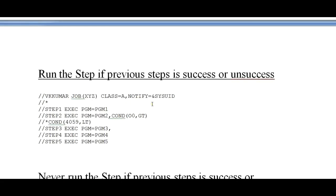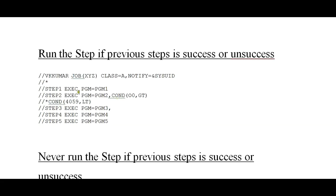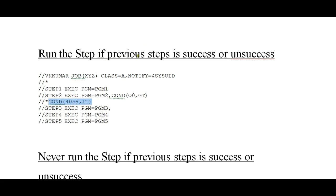The next scenario is: run the step if the previous step is successful or unsuccessful. You have five steps. In step two, if the program returns any code — whether it is throwing an error like 04, 08, or anything up to 4095 — you must compulsorily execute this particular step. To do that, you code COND equal to 00 greater than 0. Since the return code starts from 00, or you can code another condition like COND equal to 4095 less than — in that case also you can execute this particular step regardless of the previous result.